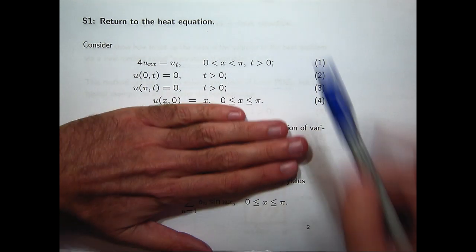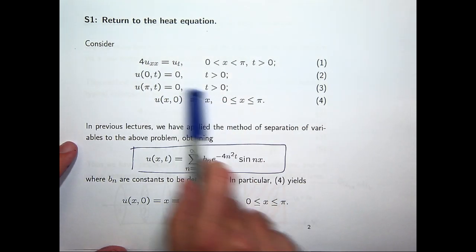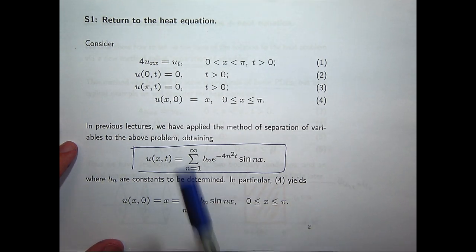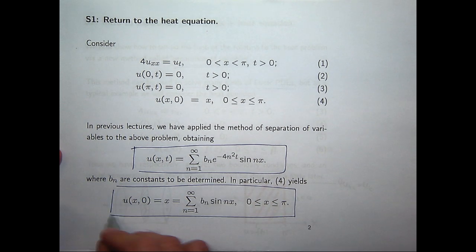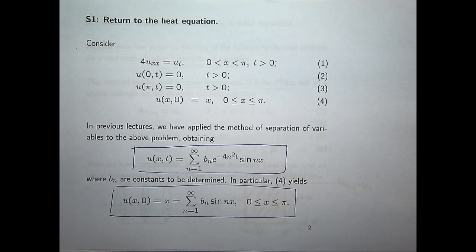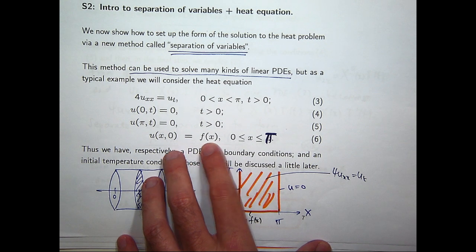Now, to get to here, we used these three equations. If you introduce the initial temperature condition by putting in T equals 0 and setting it equal to x, then this new bit of information and our understanding of Fourier series gives us the power to compute the B sub n's. So just to refresh your memory, I'm going to quickly go through the method. The problem that we'll solve is when f of x equals x.